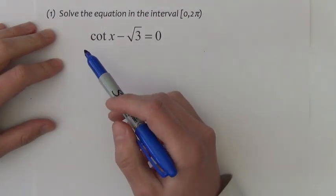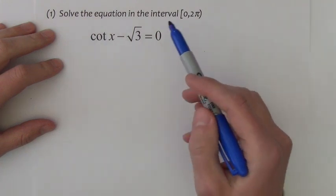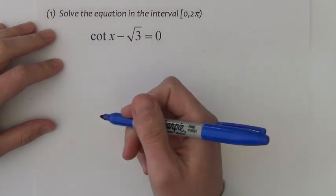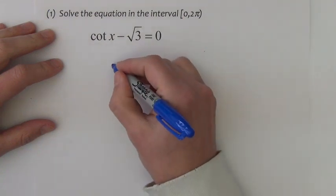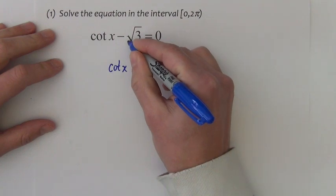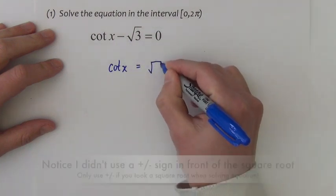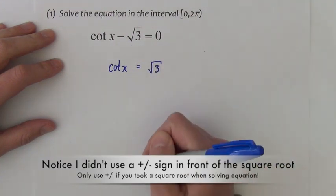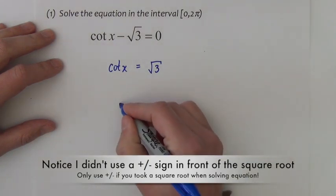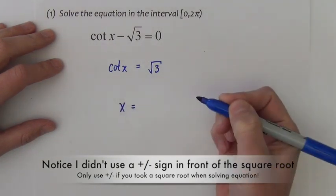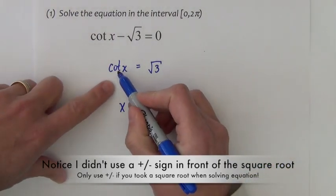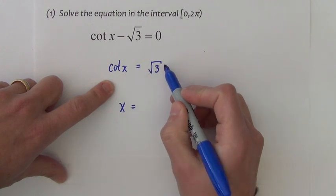The first four problems involve us solving trigonometric equations over the interval 0 to 2π. This first one is one in which I can simply get the trig function by itself by adding the square root of 3 over to the right-hand side. Once the trig function is by itself, now I'm ready to solve for the variable.